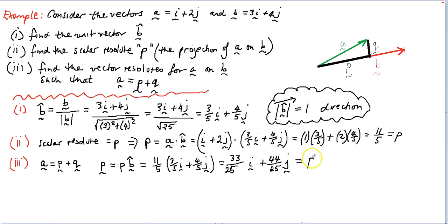So this represents now the vector P. So P is parallel to the vector B and also parallel to the unit vector B as well. Okay, so that's part 1. So we've got P.